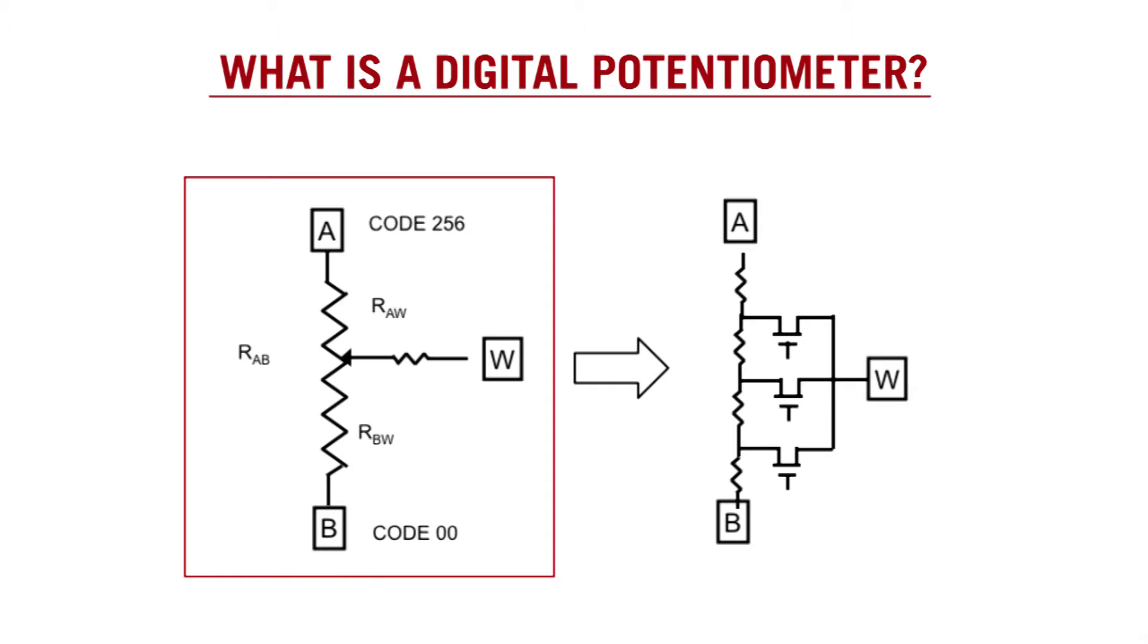In this case, there are 256 resistors, or 8 bits of resolution. This is more accurately demonstrated in the diagram on the right. The digital potentiometer consists of a series of resistors where each resistor is connected to the wiper terminal via a switch. This allows the user to move the wiper to various locations on the resistor string, which will vary the resistance values of R-A-W and R-B-W.